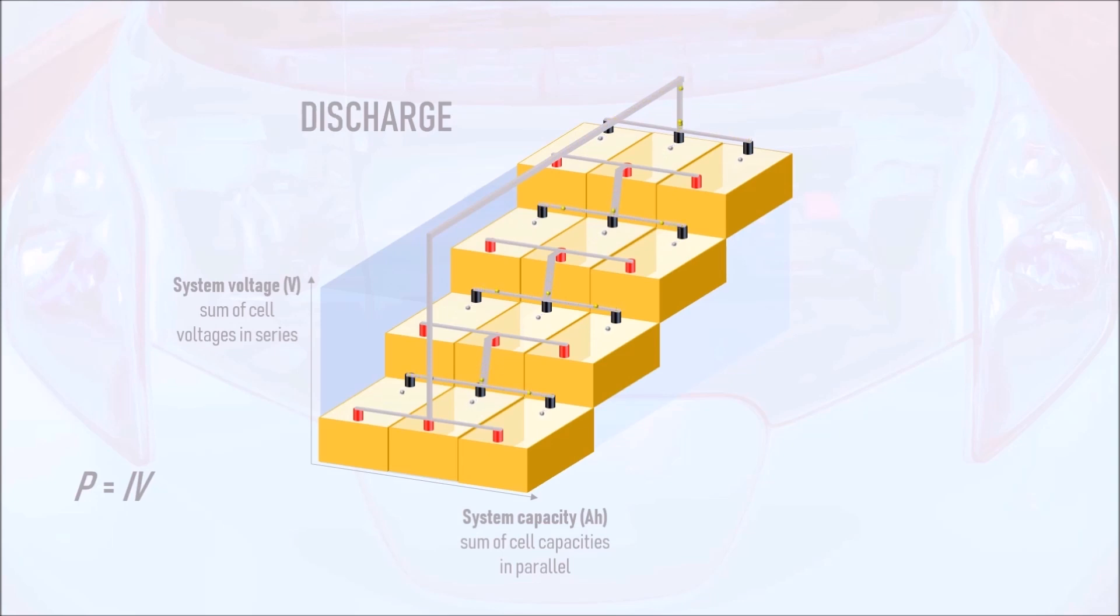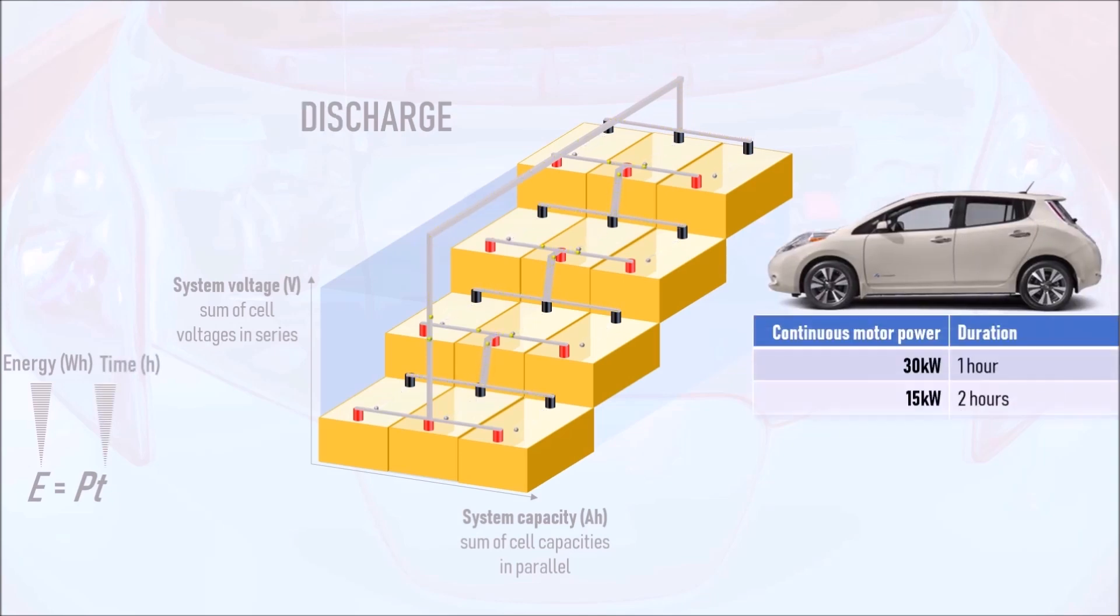The total energy contained within the pack can be calculated using the formula E equals Pt, where E is the energy in watt-hours, P is the power as before, in other words, current multiplied by voltage, and T is the time in hours. For example, a fully charged Nissan Leaf with a 30kWh battery pack, that's 30,000Wh, has enough energy to run its motor continuously at 30kW for one hour, 15kW for two hours, or 60kW for half an hour.